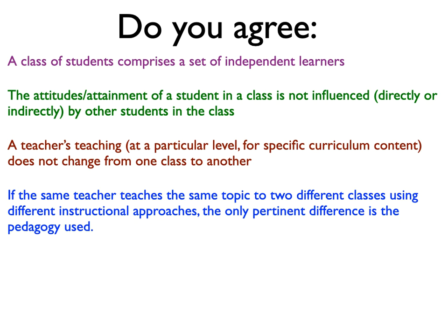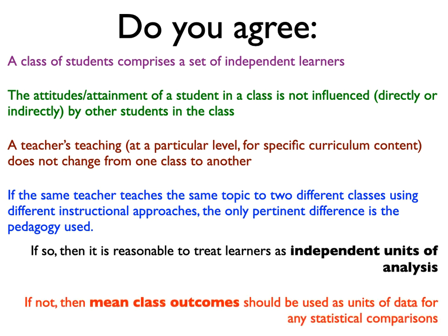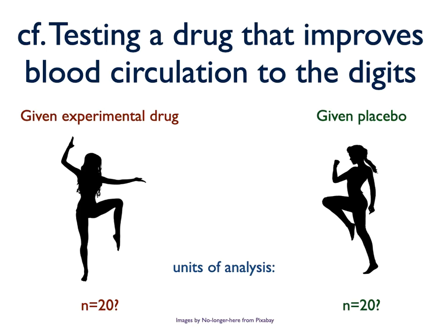If you can honestly say that the attitudes, progress, and learning of students in classes is not influenced by the rest of the class and occurs completely independently of the others in the lessons, then yes it is fair to treat the learner as a unit of analysis. I thought an analogy might be testing a drug that helped blood supply to the extremities, where blood circulation was measured for each digit. That seems sensible if the scores are to be aggregated to give an overall score for the patient. But it would not make sense to consider blood supply to different digits to be independent when it is all part of the same circulatory system being pumped around by the same heart.